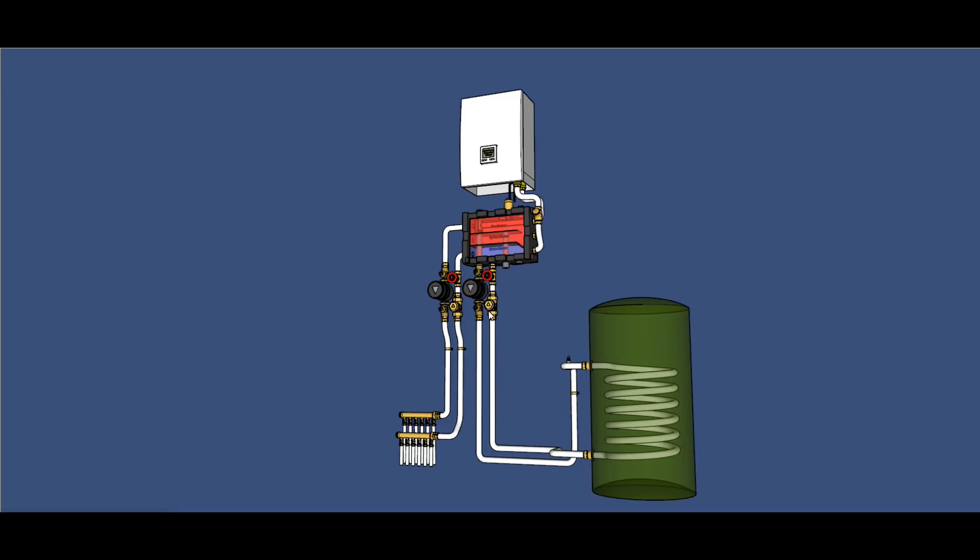In this example we show a non-return valve fitted here on the return port into the manifold. That's because the pipe drops down, goes across and rises back up - in other words it forms a heat trap.